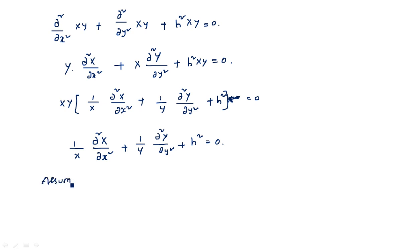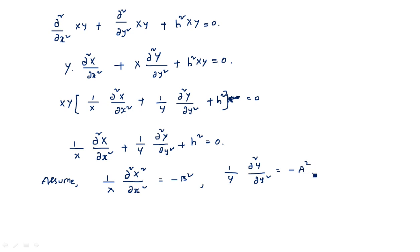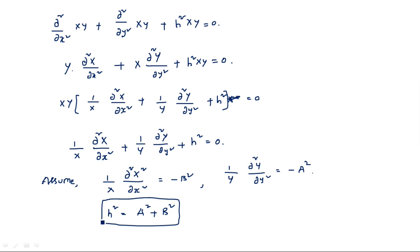Now assume: 1/X times del-squared X by del-x-squared equals minus b-squared, and 1/Y times del-squared Y by del-y-squared equals minus a-squared. Then h-squared equals minus b-squared plus minus a-squared, which means h-squared equals a-squared plus b-squared. So a is related to Y and b is related to X.